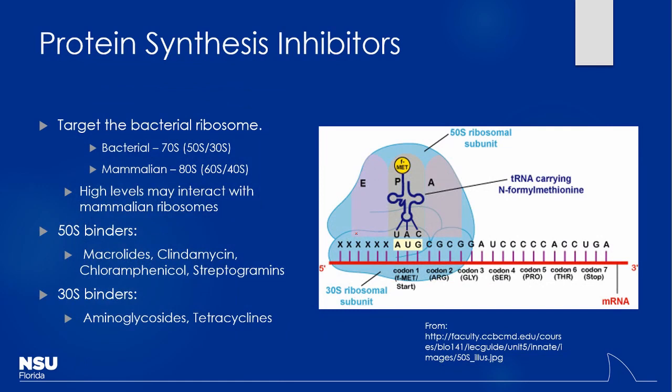So that's vancomycin. Those are all the cell wall active drugs we've covered: the penicillins, the carbapenems, the cephalosporins, the monobactams, and vancomycin. Those are the main cell wall active antibiotics.